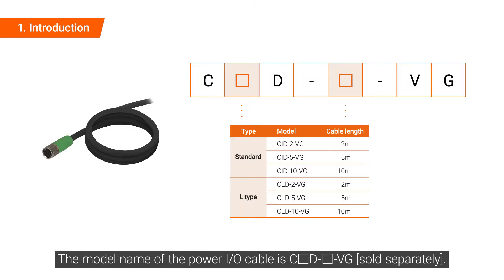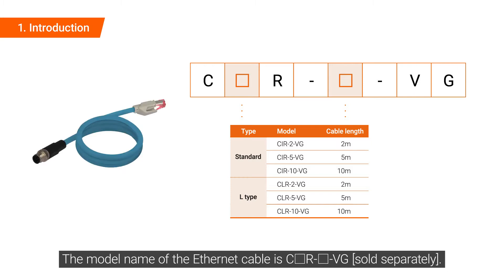The model name of the PowerIO cable is C2D-2-VG. The model name of the Ethernet cable is C2R-2-VG.